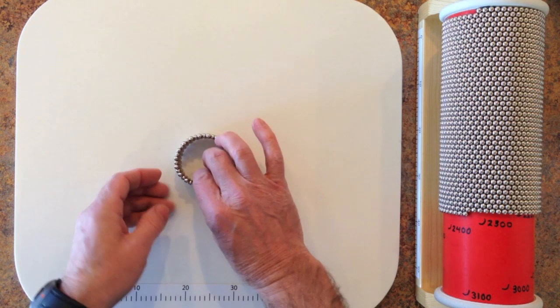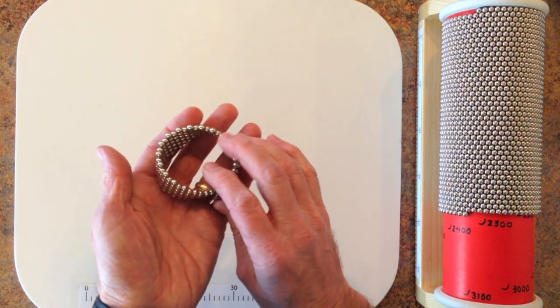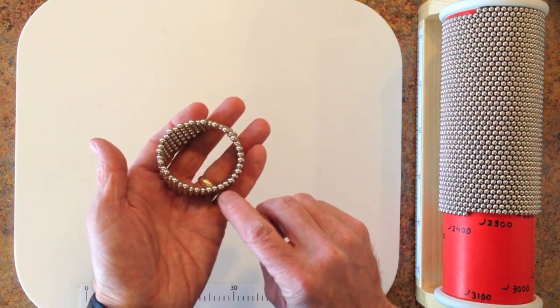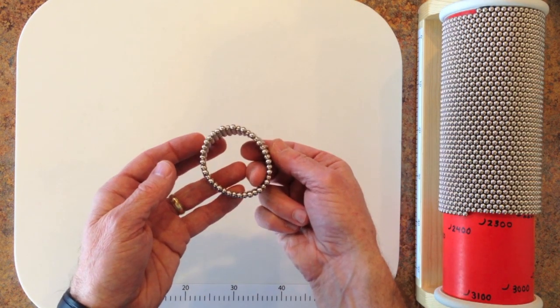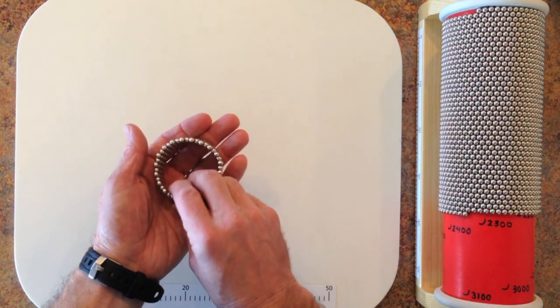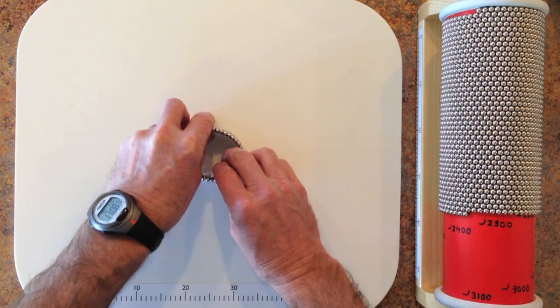Each end of the tube should have 40 magnets. 1, 2, 3, 4, 5, 6, 7, counting around the end like that. Alternating between high and low as you move around the circle.